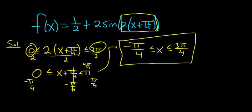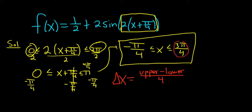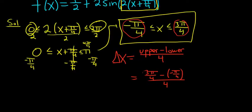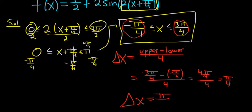The next step is to compute what I like to call delta x. So step two is to compute delta x, and it's always going to be upper minus lower divided by 4. So upper minus lower divided by 4 — this is your upper and this is your lower. So this is 3π/4 minus negative π/4, all divided by 4. Minus and minus is plus, so this is 4π/4 over 4, which is π/4. Our delta x equals π/4.